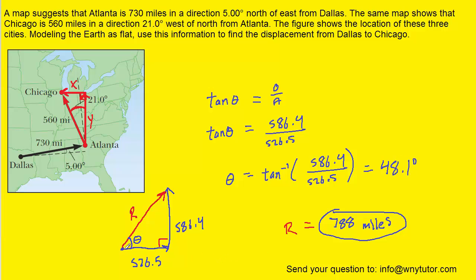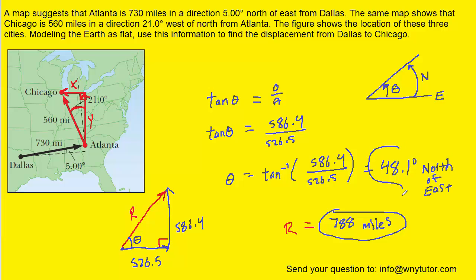We can see that this angle is measured in a particular way. Drawing a horizontal line, the 48.1-degree angle is moving north of the easterly direction — since east points horizontally and the angle is measured upward, we say 48.1 degrees north of east. So that is the correct direction of the displacement, and 788 miles is the magnitude of the displacement.